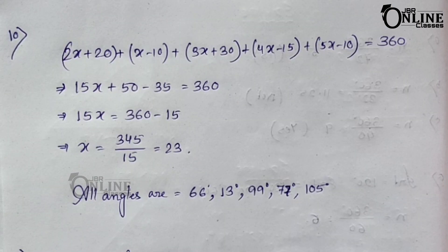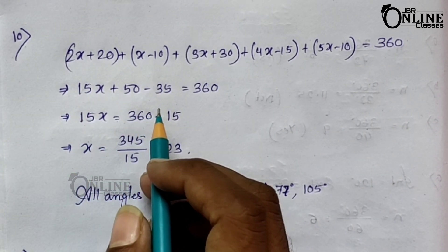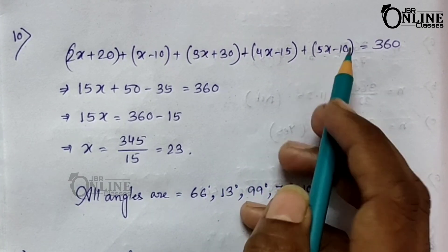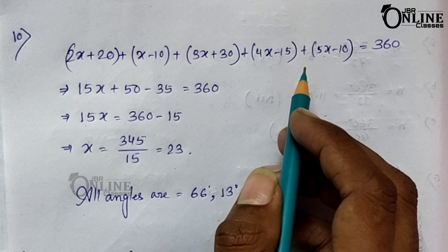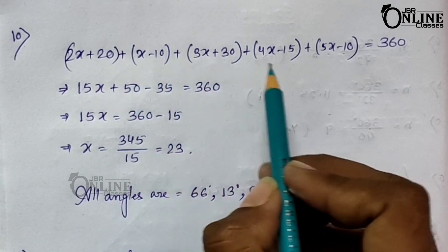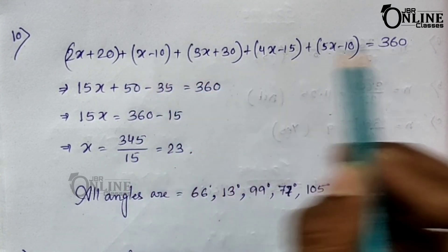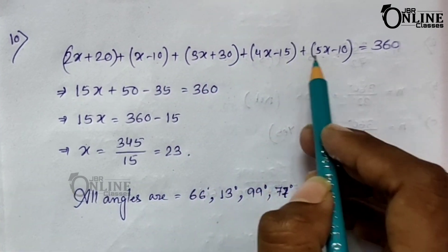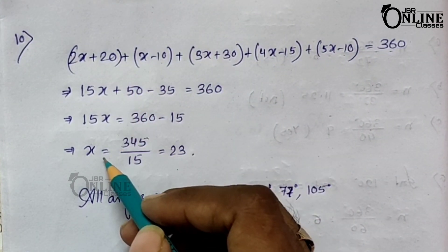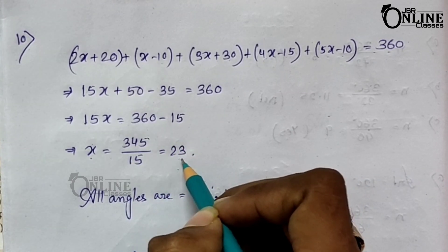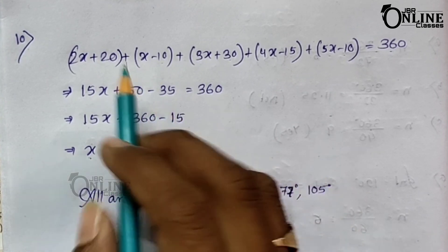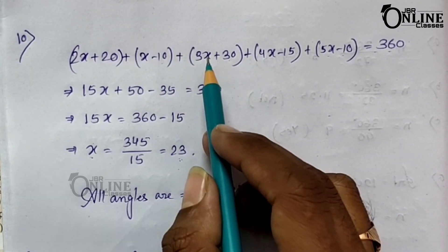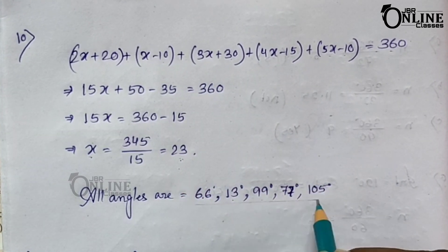Problem number ten: the sides of a pentagon are produced in order and the exterior angles obtained measure (2x + 20)°, (x − 10)°, (3x + 30)°, (4x − 15)°, and (5x − 10)°. Since the sum of exterior angles of a pentagon equals 360°, adding all terms gives x = 23. Substituting: the angles are 66°, 13°, 99°, and the remaining values can be found similarly.